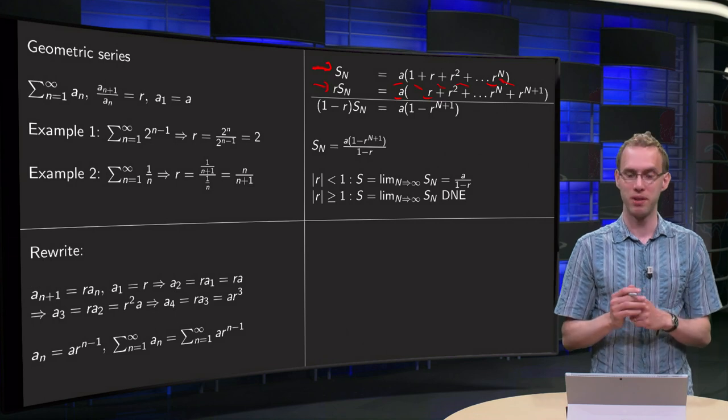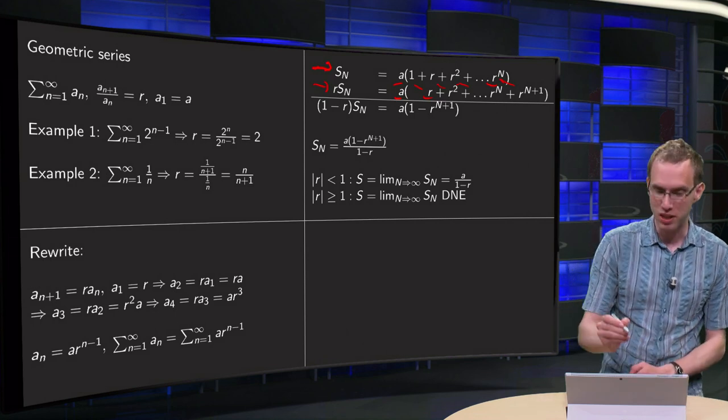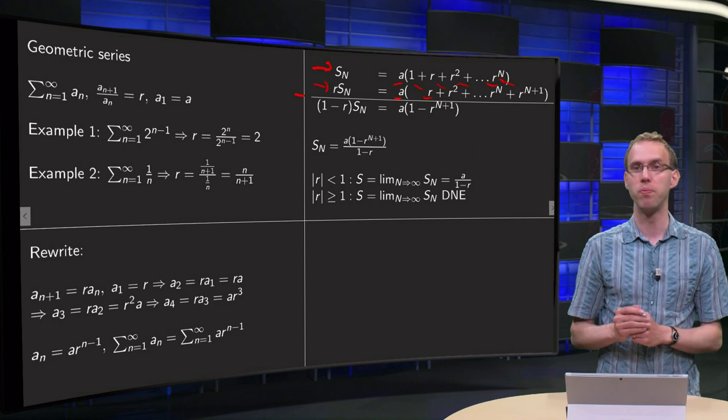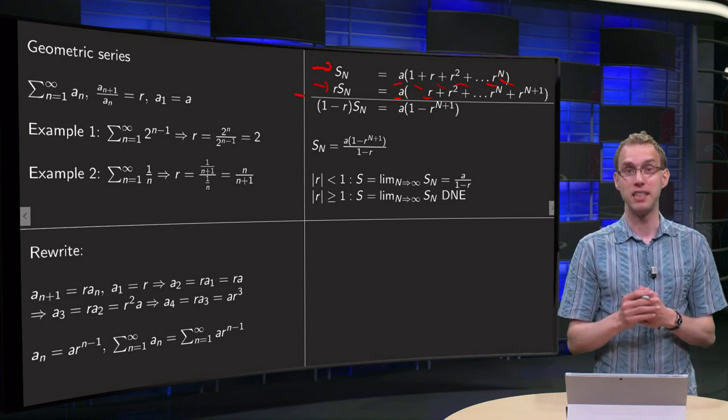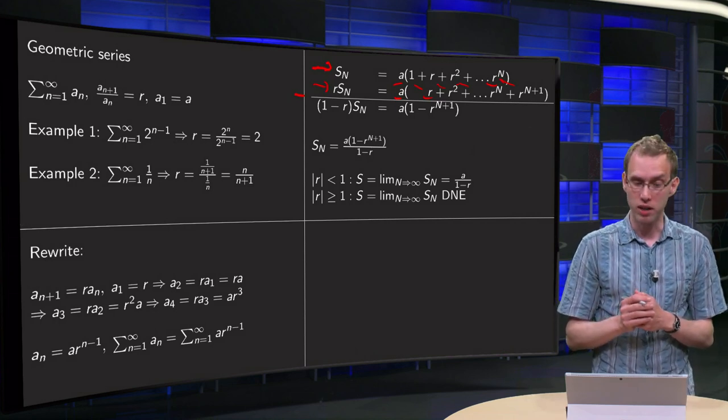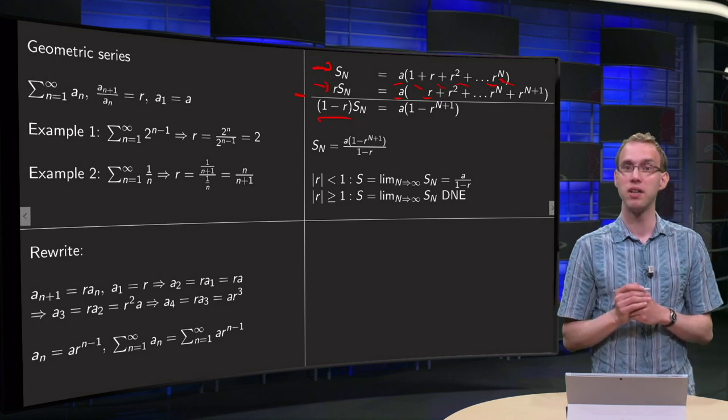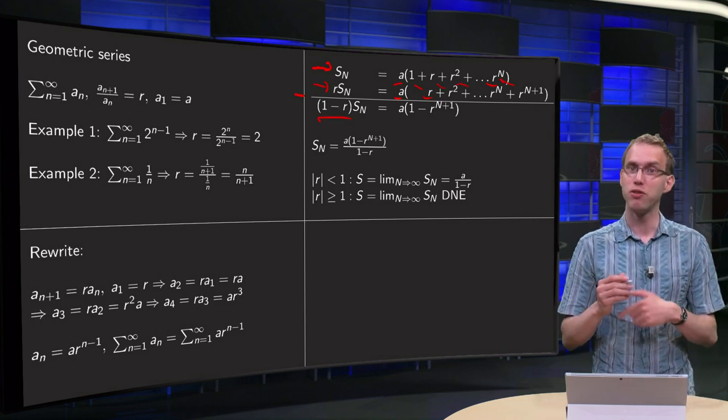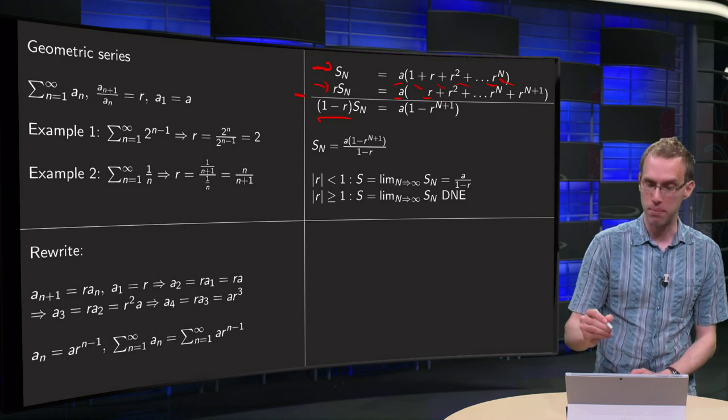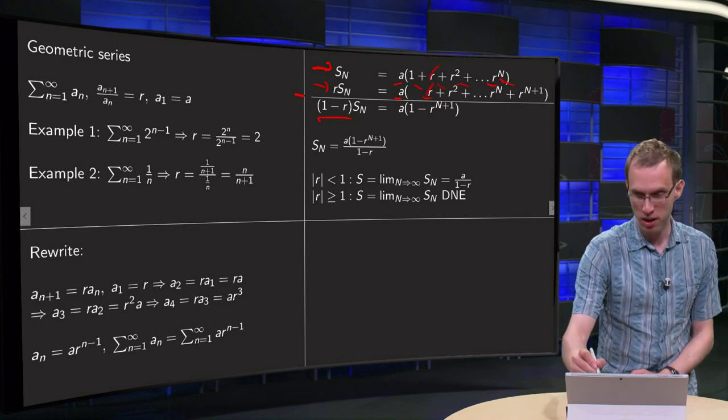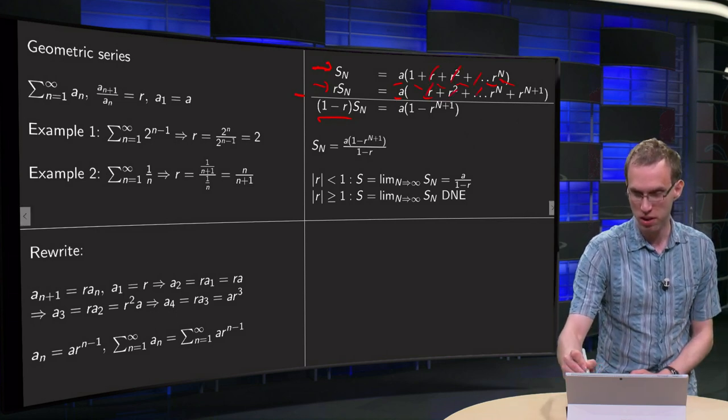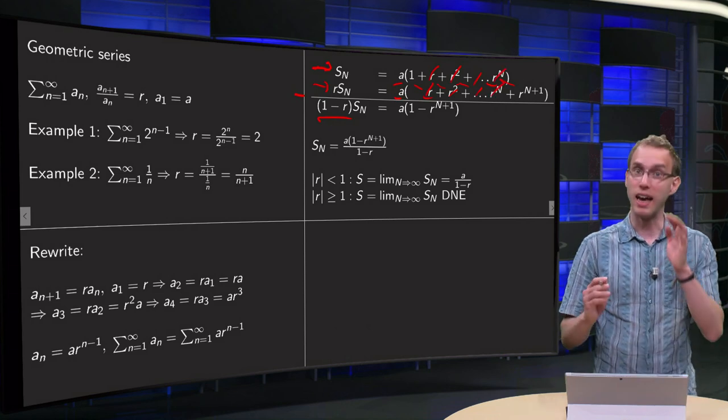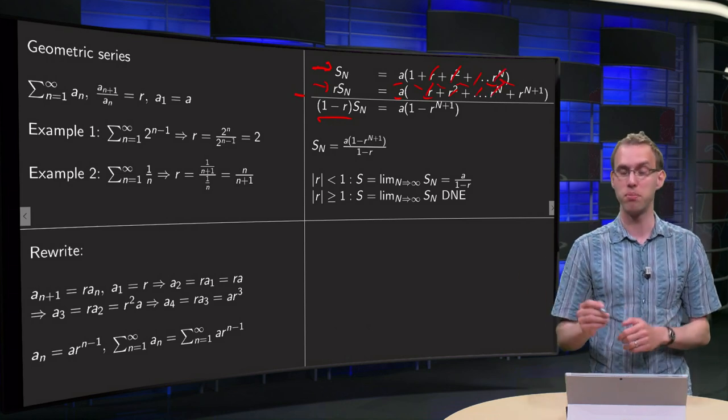Well, how does this help? Well, now we can do a nice little trick. We can subtract those two. Then we get S_N minus r times S_N, so (1 - r) times S_N, and if you subtract those two, you see something nice happen, because those cancel out, those cancel out, those cancel out. Everything cancels out except for the first and the last term, those survive.